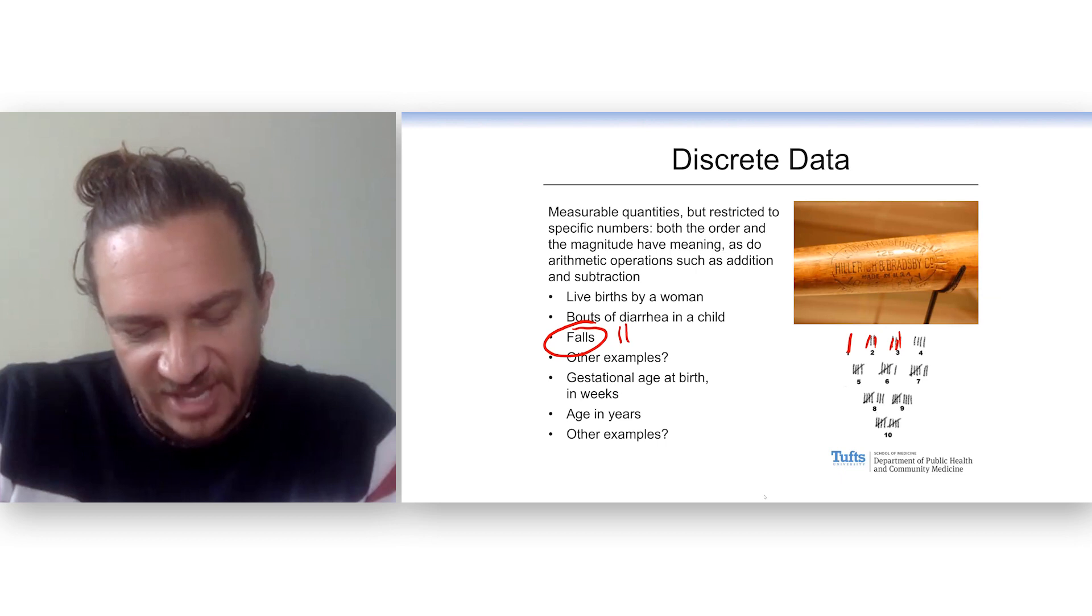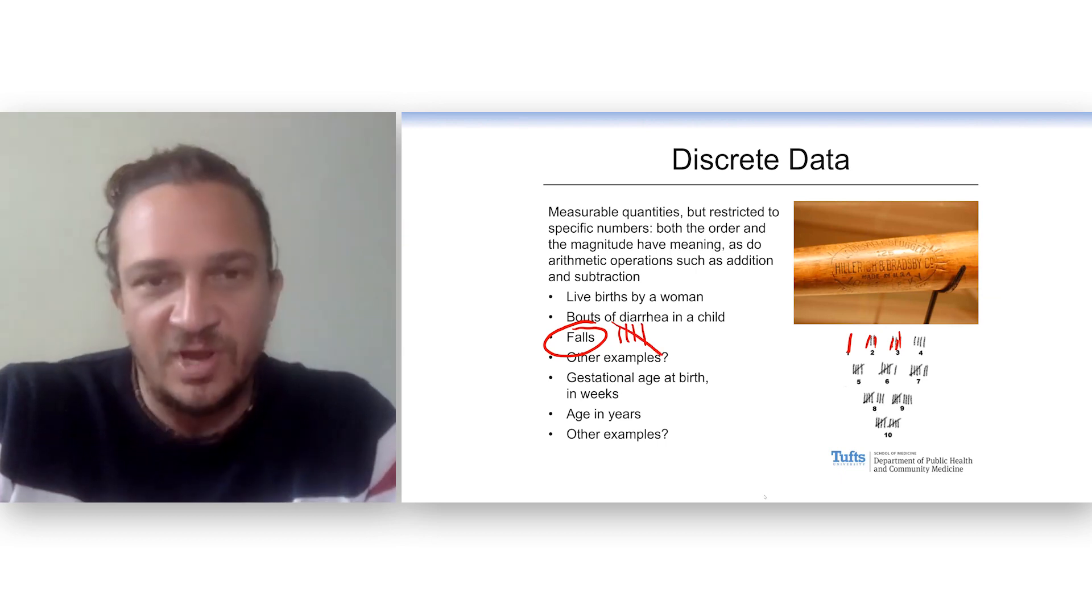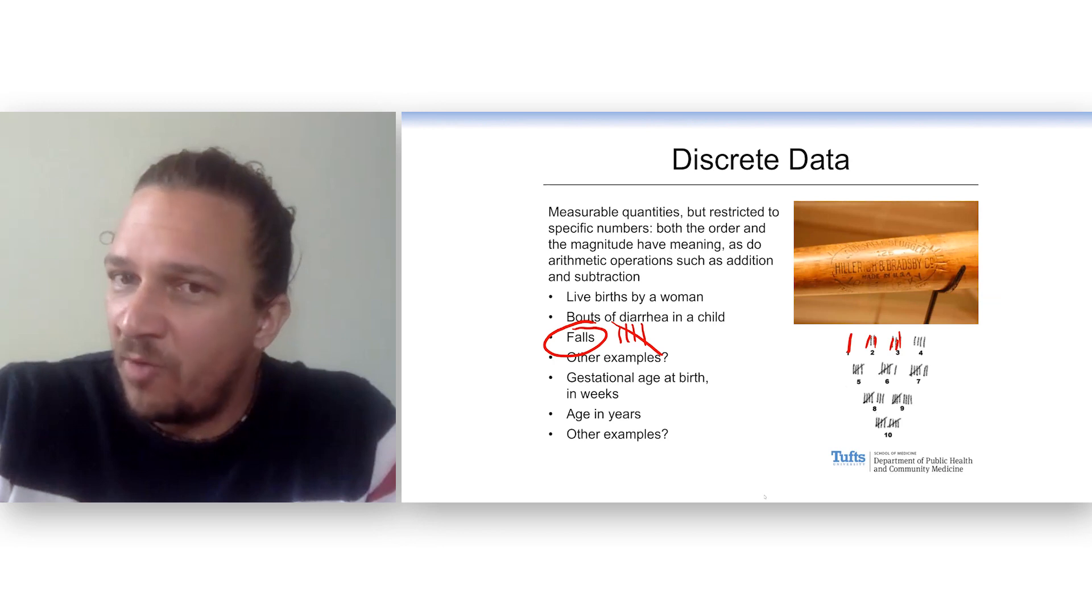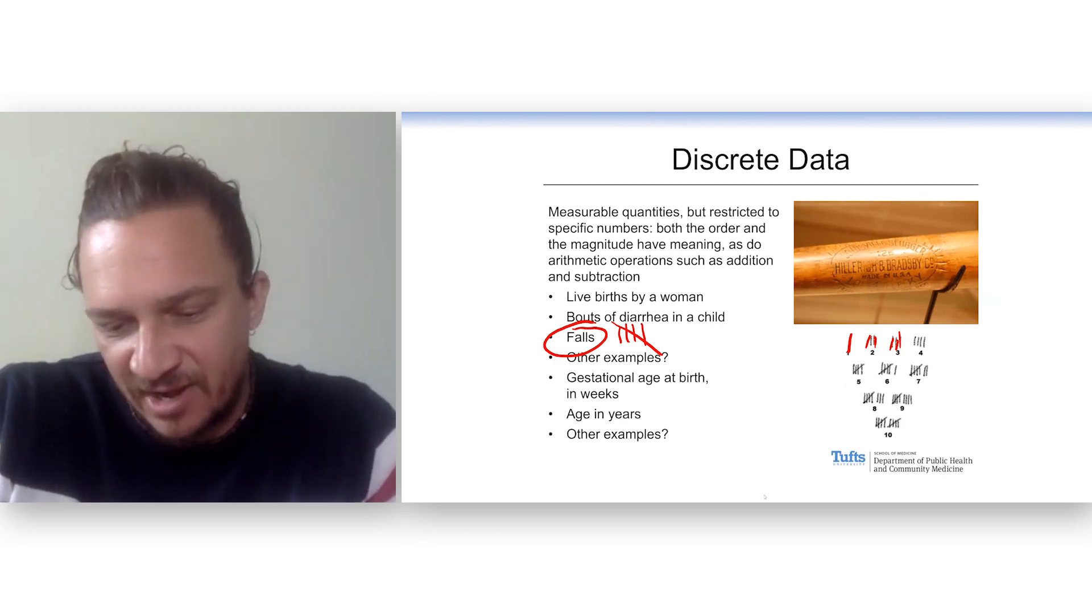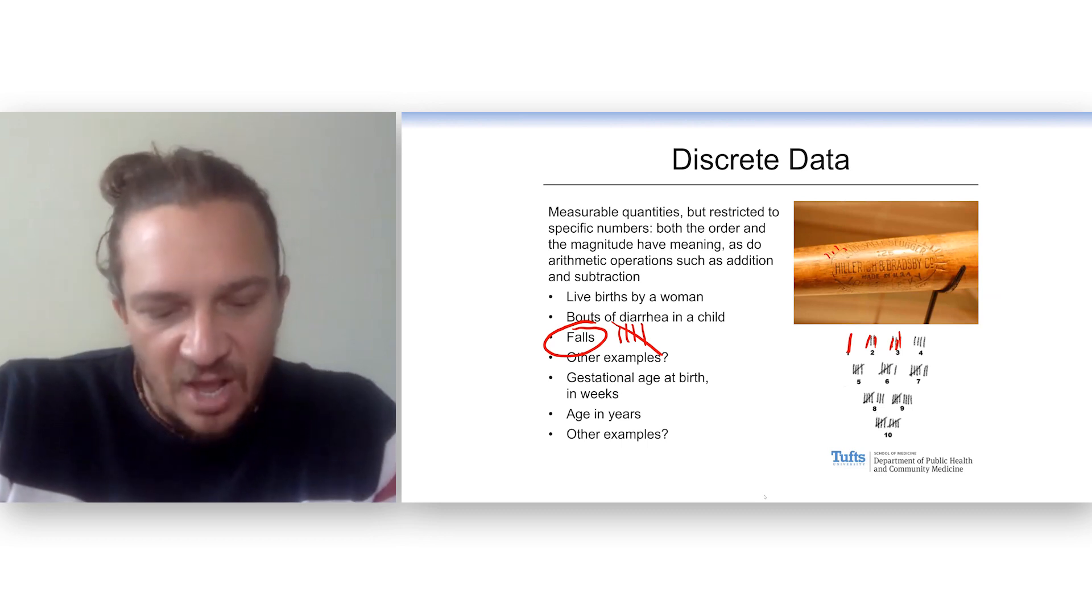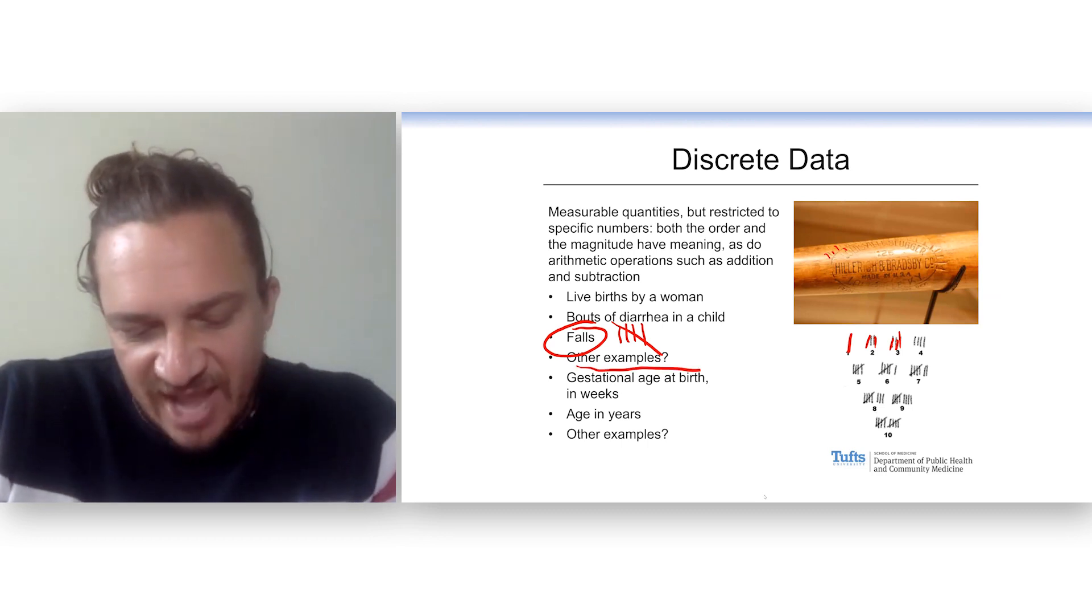How about the number of falls in an elderly? We can go like this. This is an example. This baseball bat here is from Babe Ruth, one of the greatest home run hitters of all time. And whenever he would hit a home run, he would take his pen knife out of his pocket and he would put a little notch in his bat, just like this.